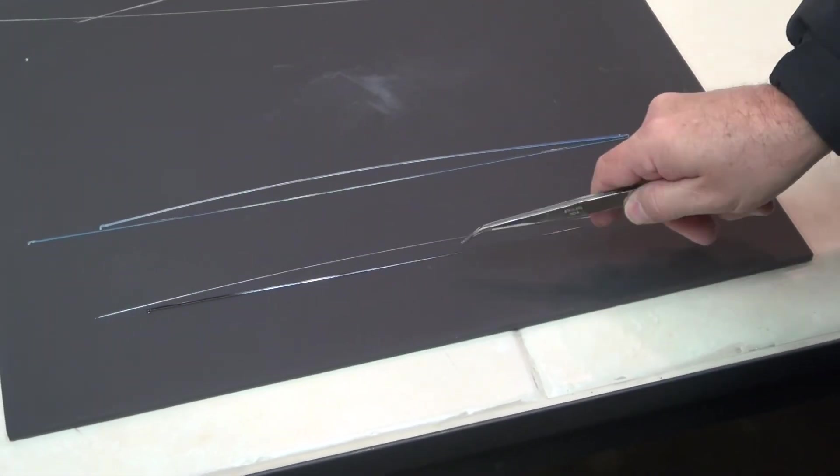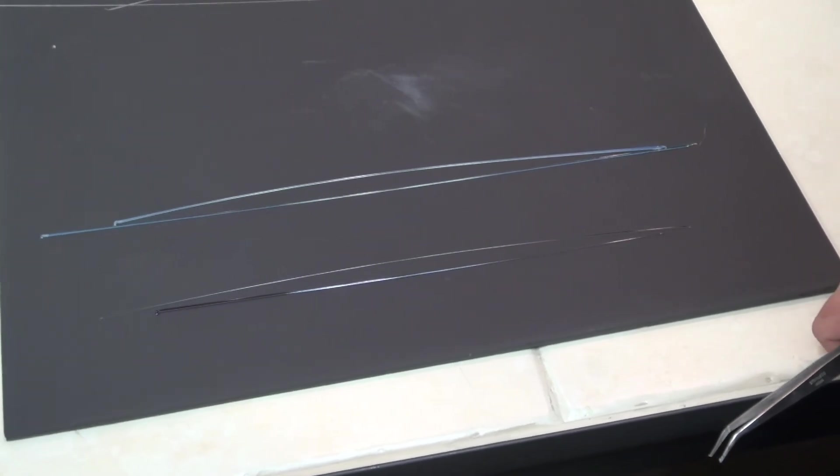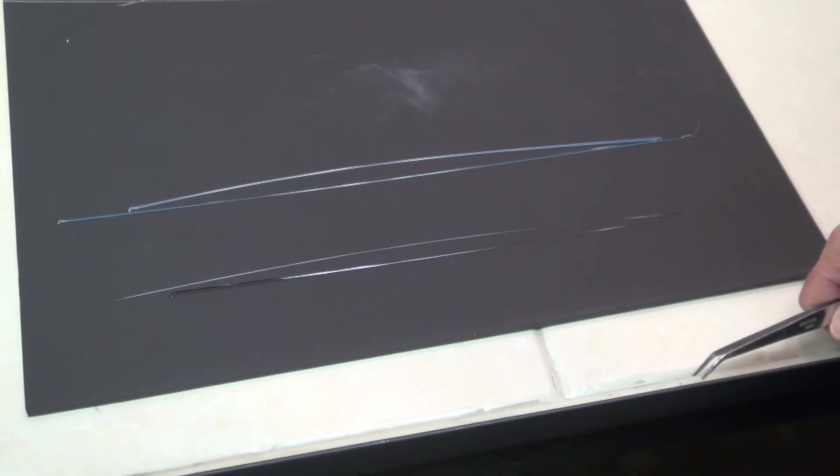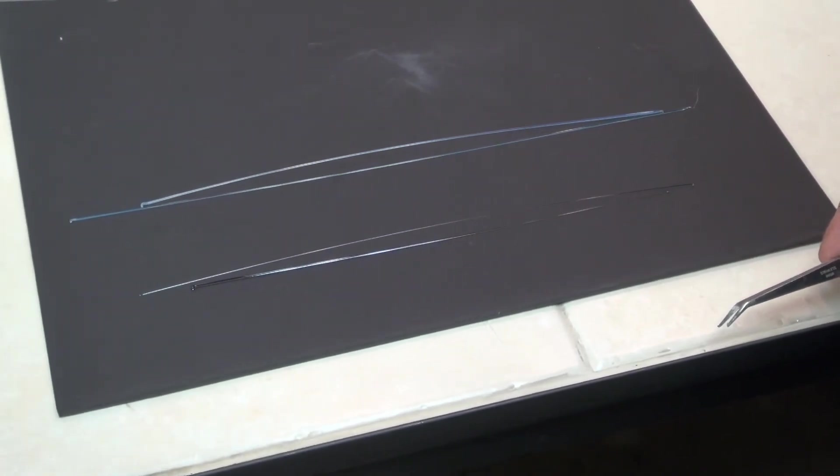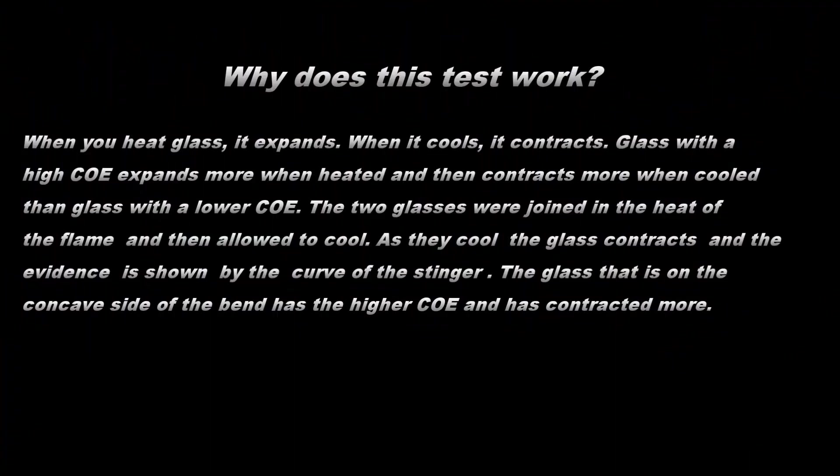So here's the pull we just did. This bottom piece is the 90 on 90, nice and straight. And the piece above it is the 90 and 96, and you can see that curve. There's no denying it. So there too is another one of your compatibility tests, doing a stringer pull. I've never had this not work. Go ahead and try it. Thank you very much and I'll see you next time.